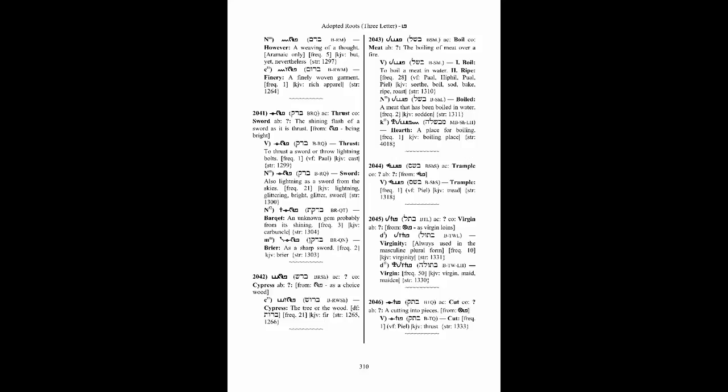There is another type of root in this lexicon, the adopted root. These three-letter roots are identified by a four-digit number, but begin with the two-thousands, whereas the parent roots begin with the one-thousands. For a more detailed explanation of the differences between the parent, child, and adopted roots, refer to the introductory material at the front of the lexicon.